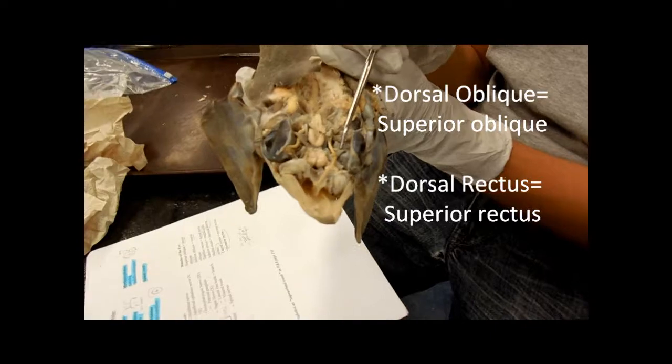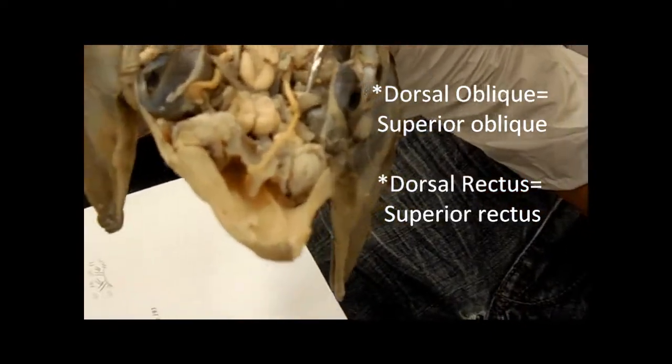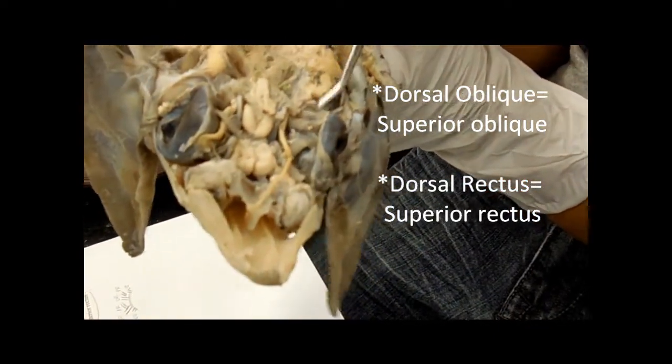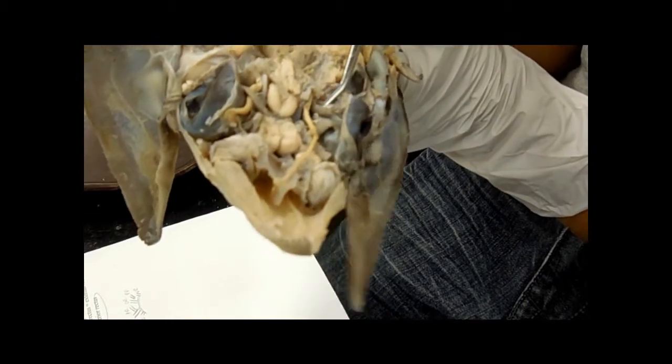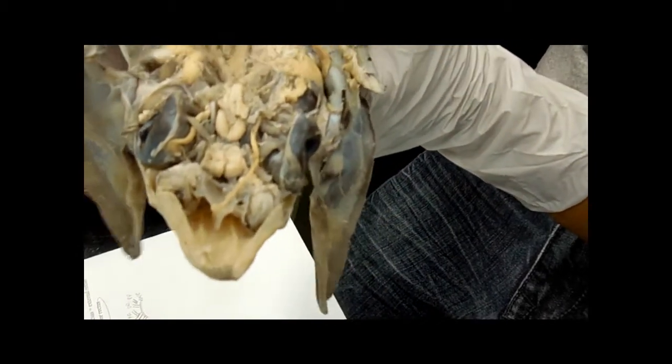This is the dorsal oblique, the front one, and this is the dorsal rectus. So the top one's the dorsal, bottom's the ventral. Dorsal oblique, dorsal ventris, dorsal rectus.